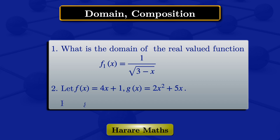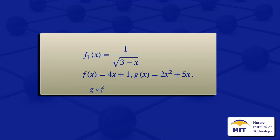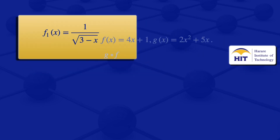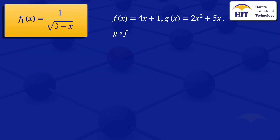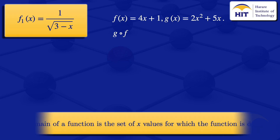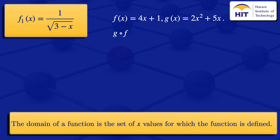Looking at the first function f(x) = 1 divided by the square root of 3 minus x: by definition, the domain of a function is the set of values for which the function is defined. To find these values, we look at this fraction — its denominator must not be equal to 0.